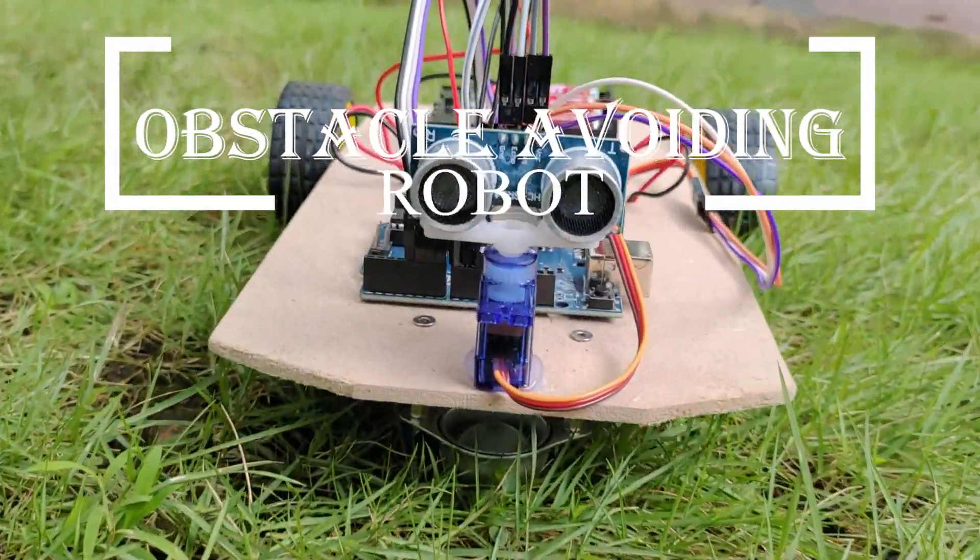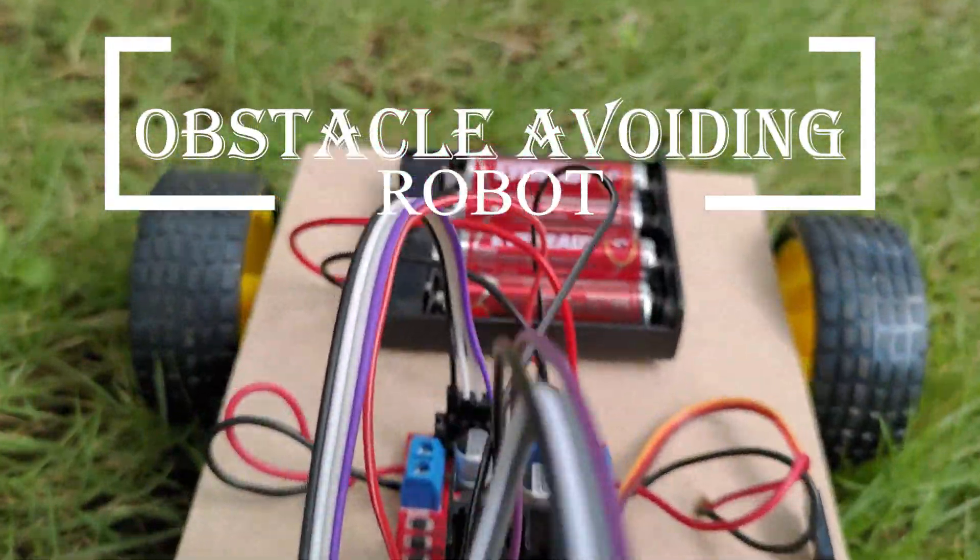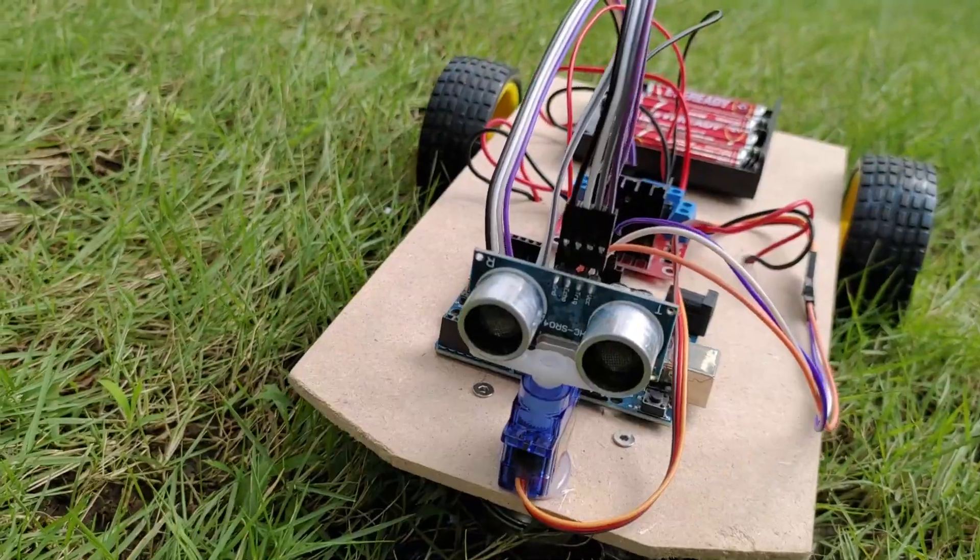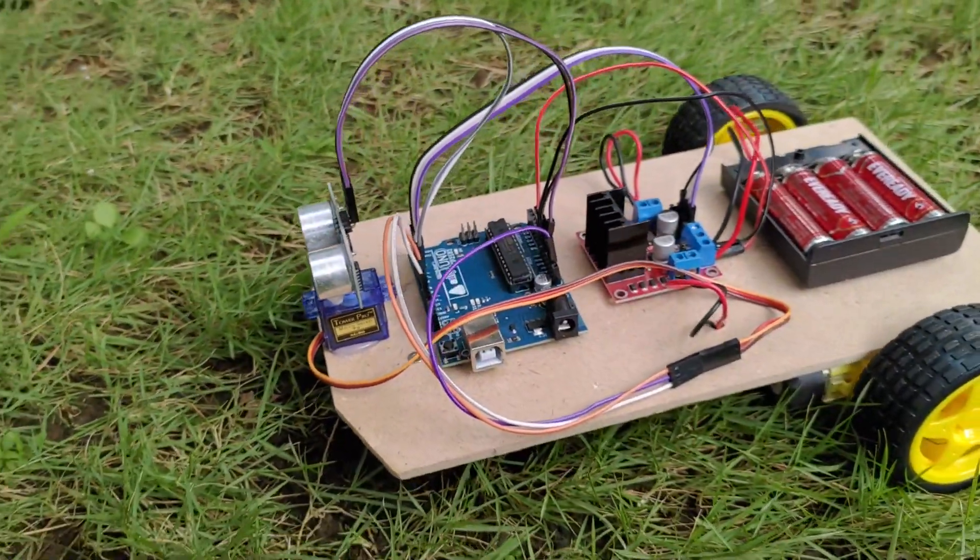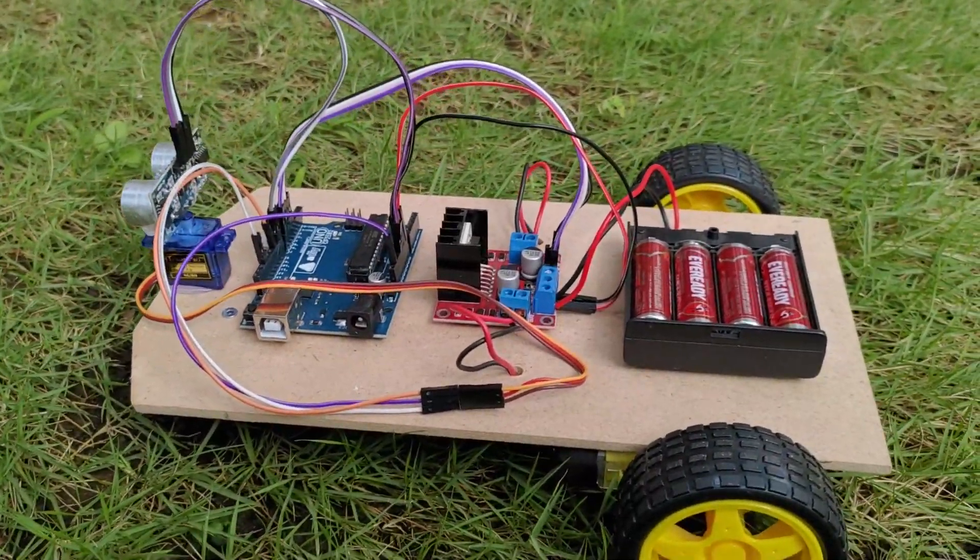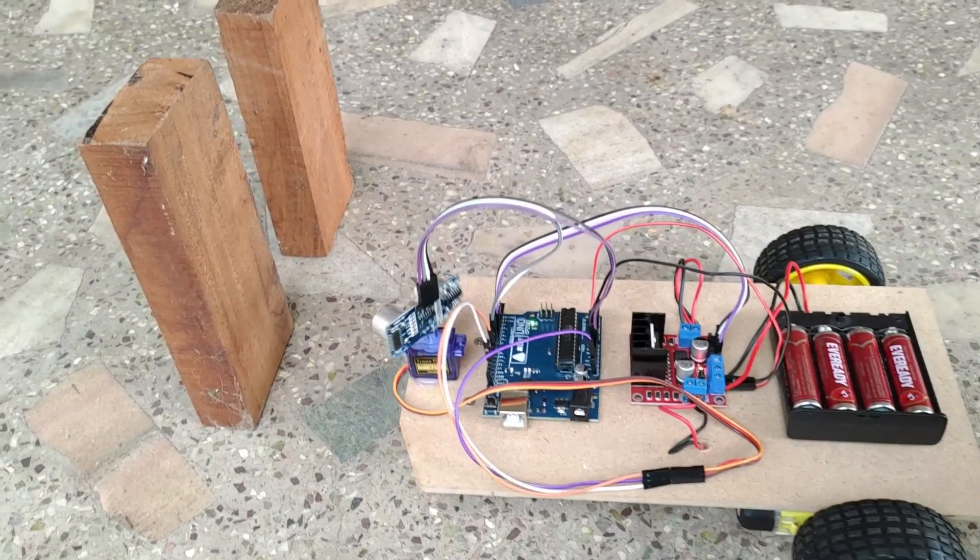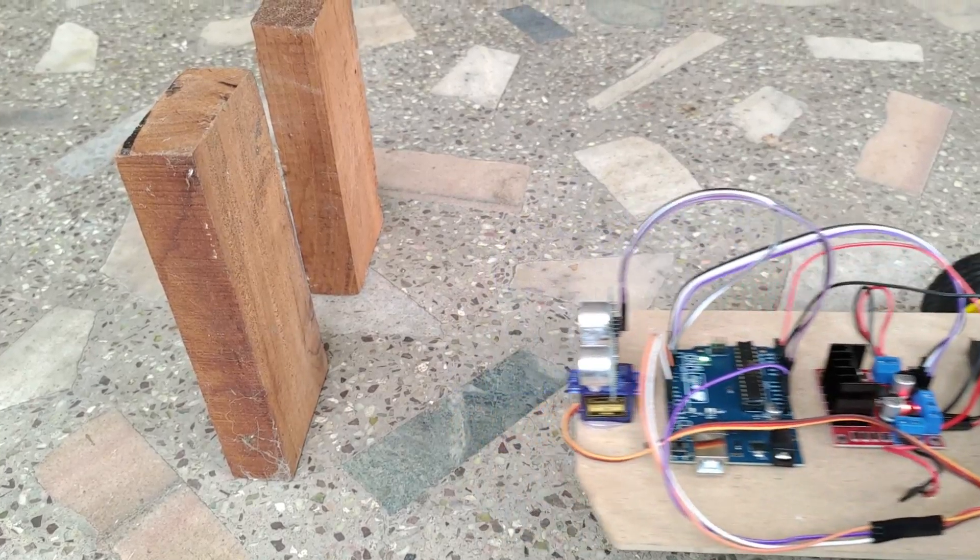Hello friends, welcome to Science for You. Today I am going to show you how to make an obstacle avoiding robot. Watch till the end to see the detailed testing of the obstacle avoiding robot. The robot detects the obstacles and automatically changes direction.